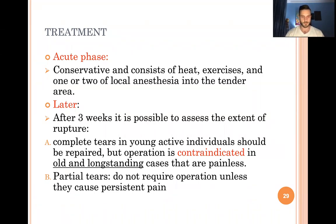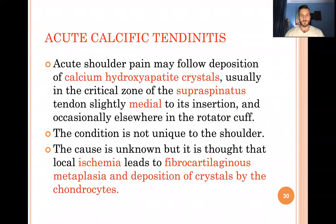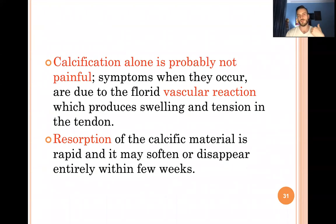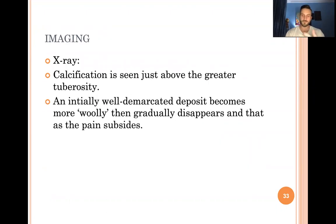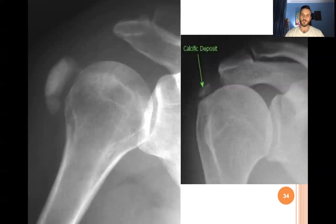Acute calcific tendinitis involves acute shoulder pain due to deposition of calcium hydroxyapatite crystals in the supraspinatus tendon. Treatment includes painkillers as the primary measure, corticosteroid injections, and surgery for very severe cases. X-ray clearly shows the calcific deposit — sometimes a large calcification — within the supraspinatus tendon.